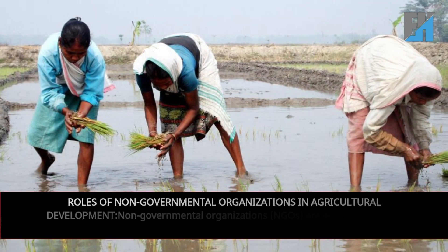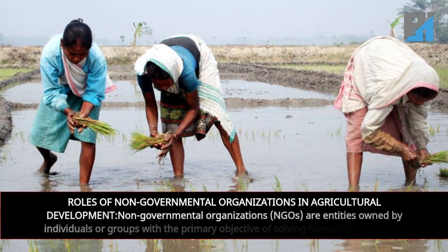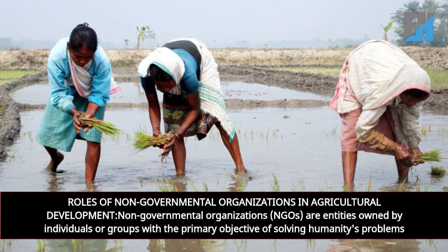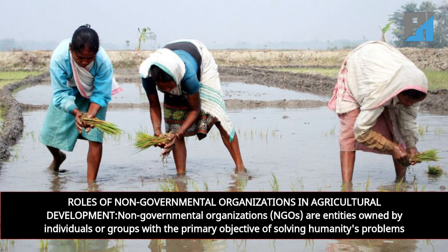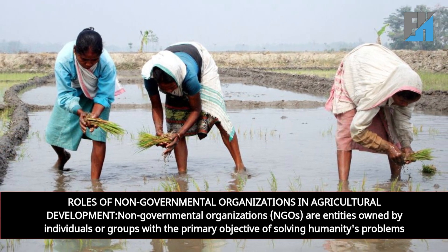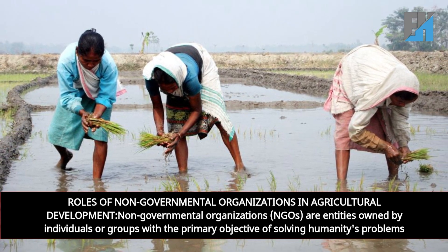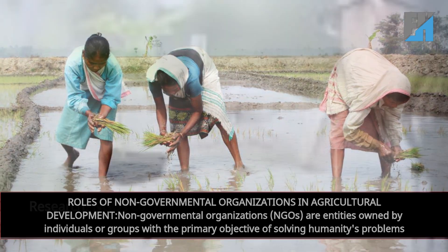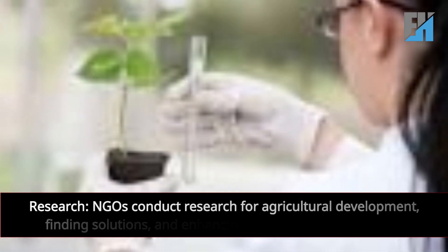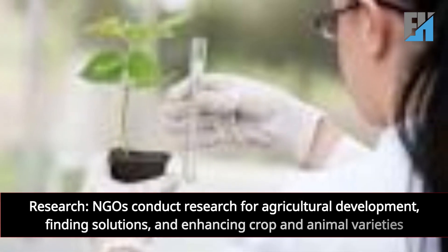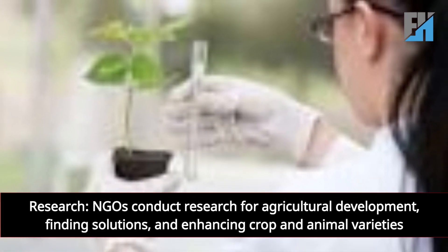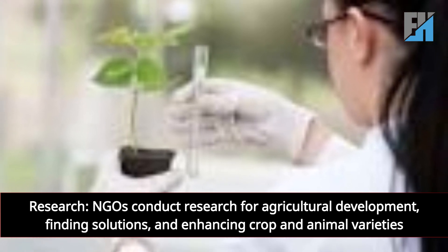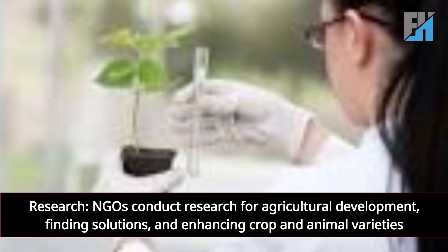Roles of non-governmental organizations in agricultural development: NGOs are entities owned by individuals or groups with the primary objective of solving humanity's problems. In terms of research, NGOs conduct research for agricultural development, finding solutions and enhancing crop and animal varieties.